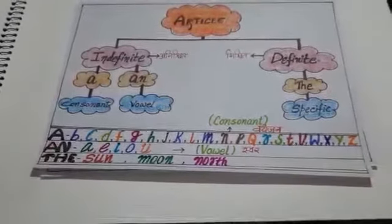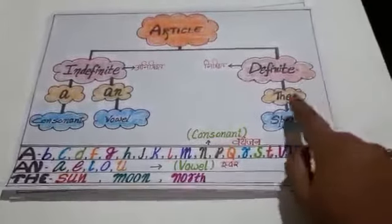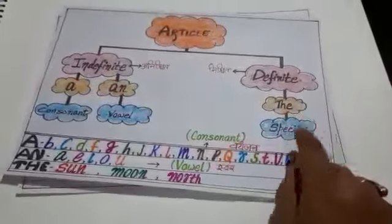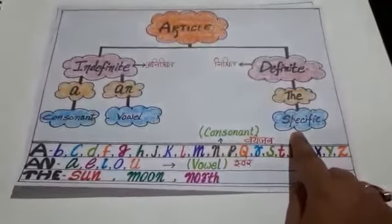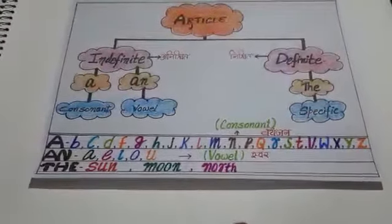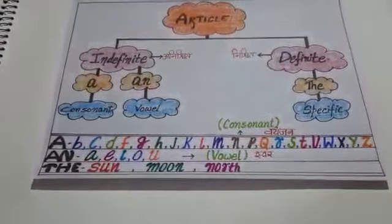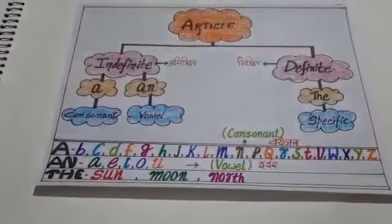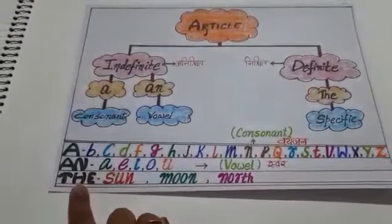Now, come to definite. As you can see, there is one part that is the and the is used with specific things. Specific things like sun, moon, north, east, west, president, prime minister. Specific things. Revashree public school, specific things. We have to use the.